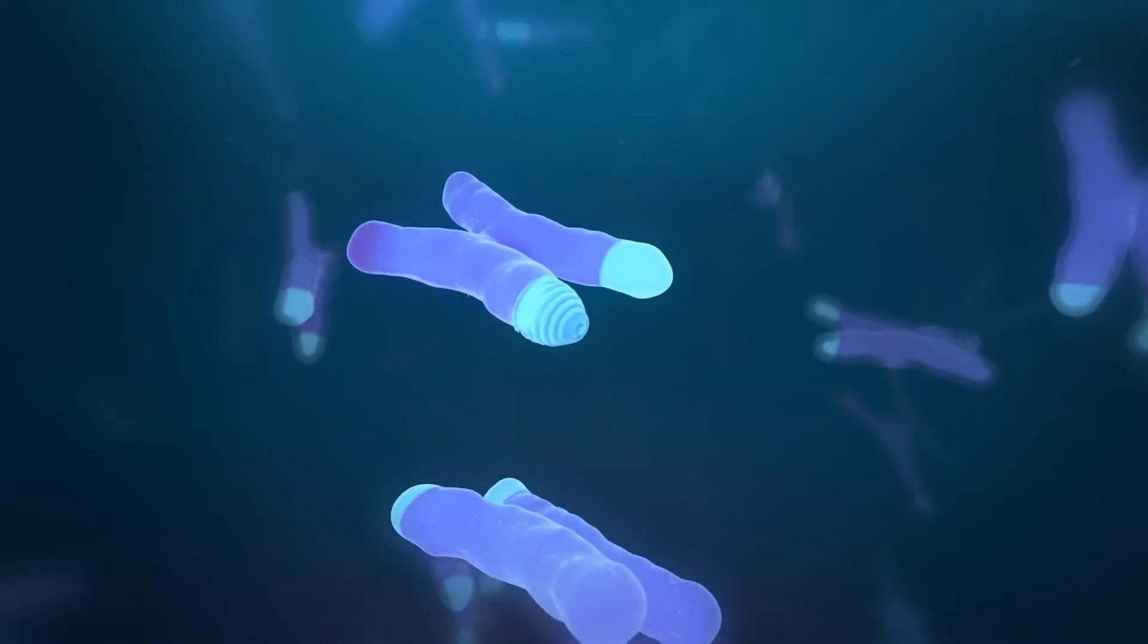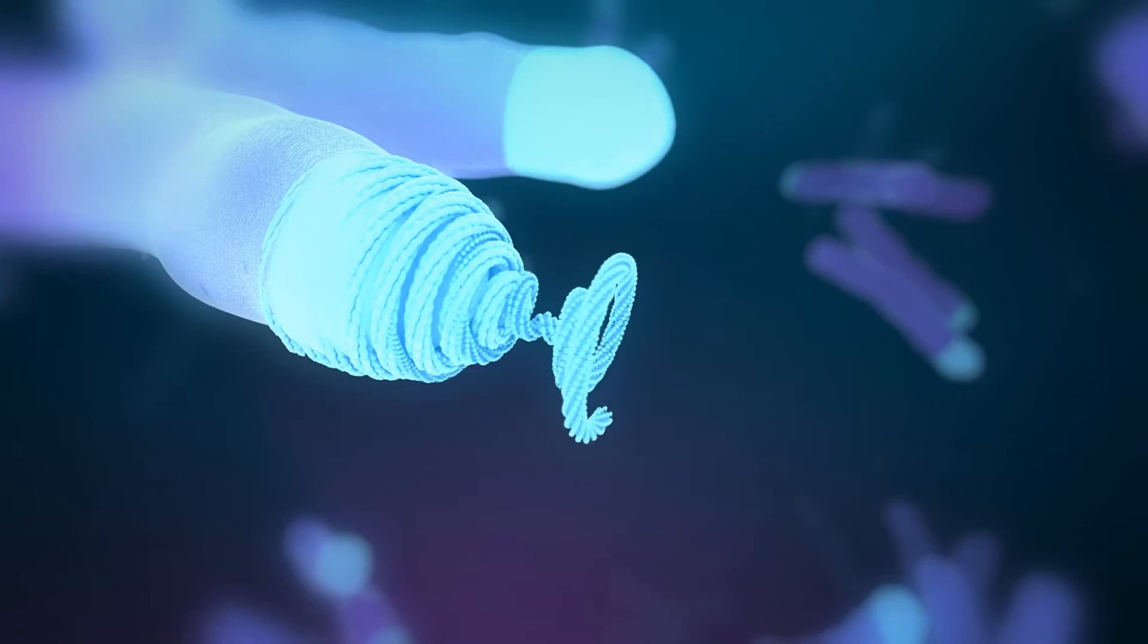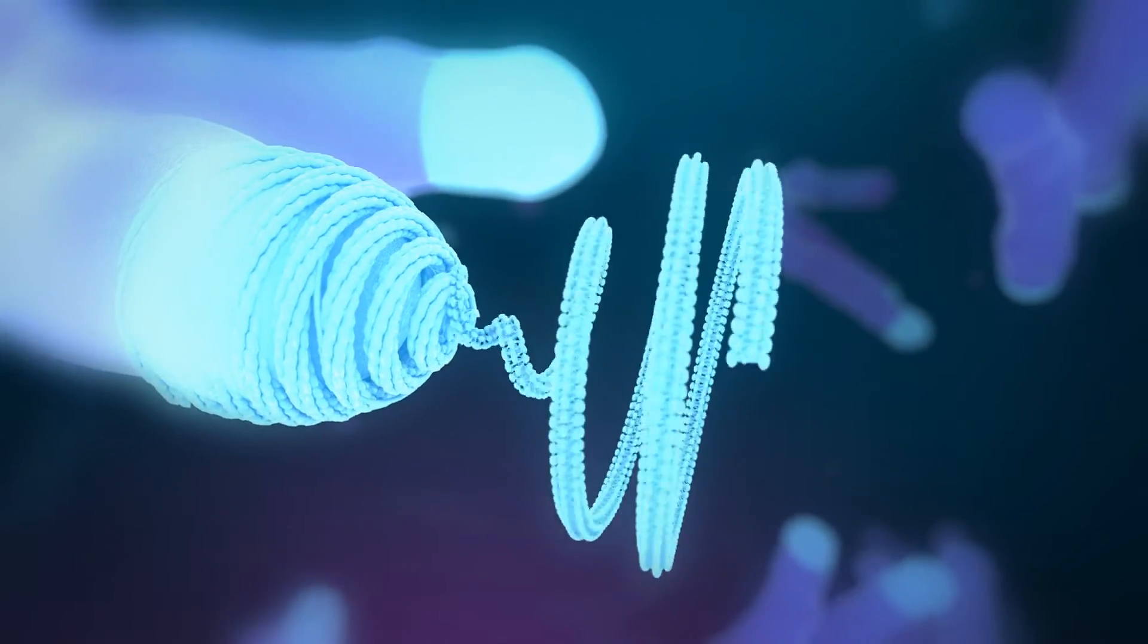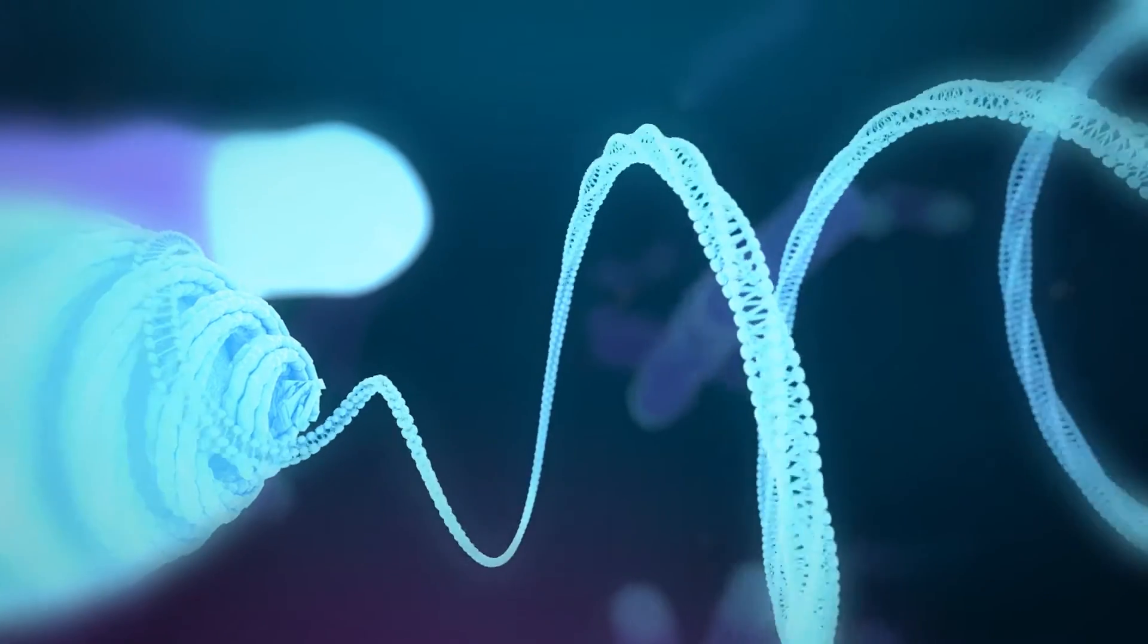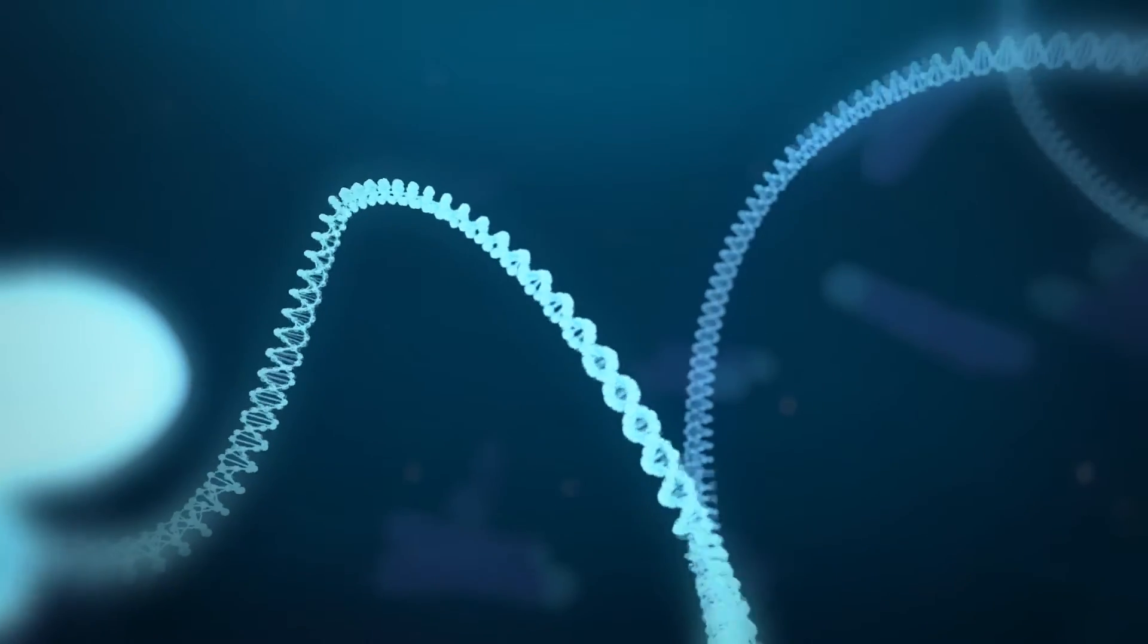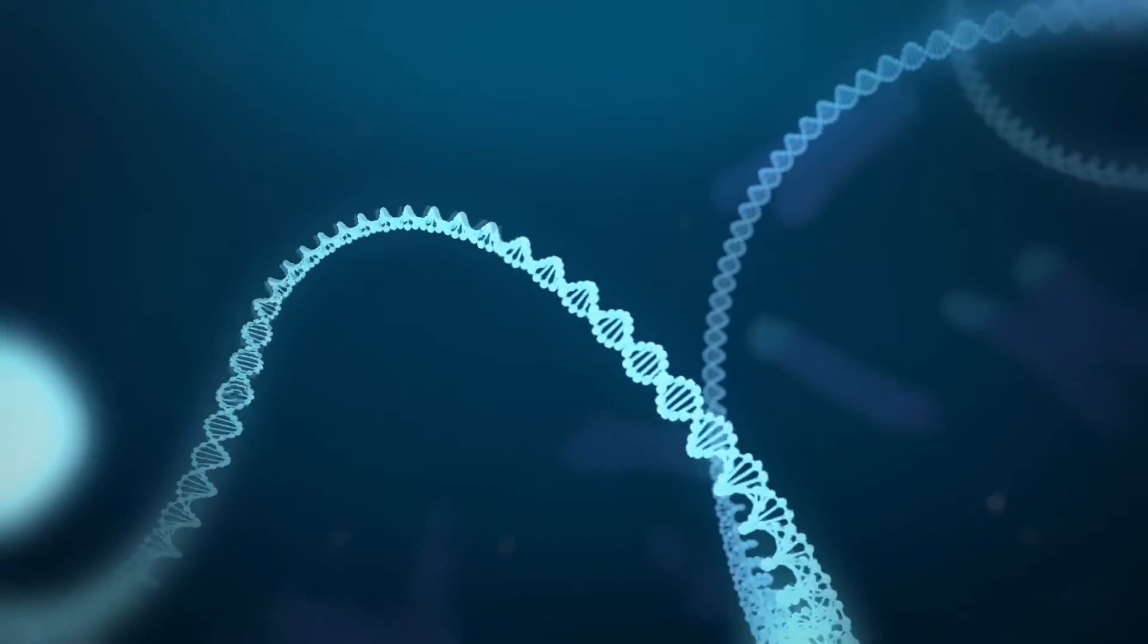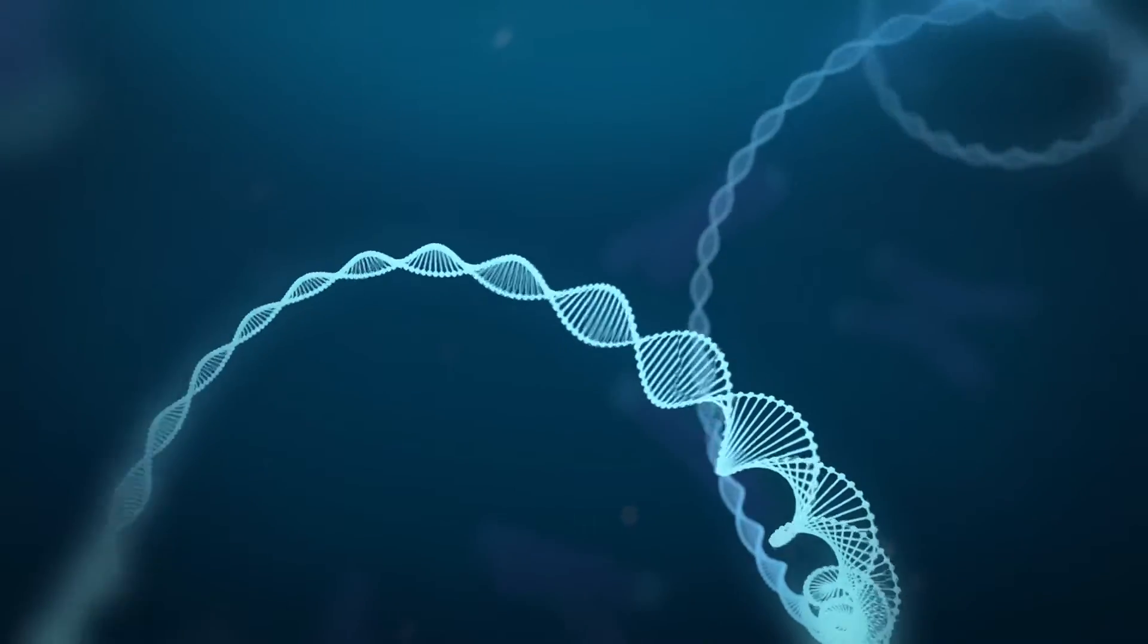DNA in a cell is typically very compact, and compact DNA cannot be used. If a cell needs to use a stretch of DNA, for example to produce hemoglobin or insulin, this part of the DNA needs to open up so that it becomes accessible. Epigenetic enzymes take care of this and locally open up or close stretches of DNA.